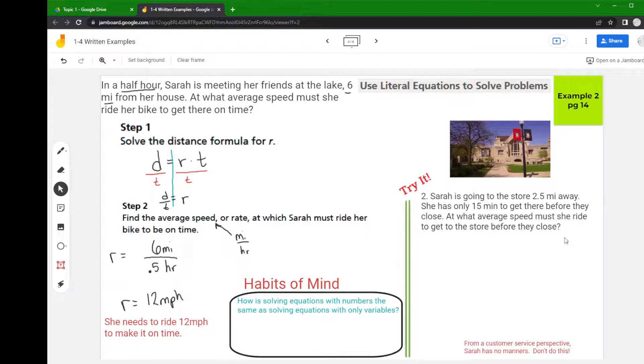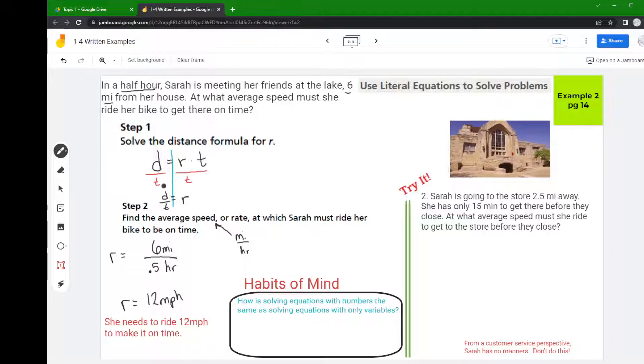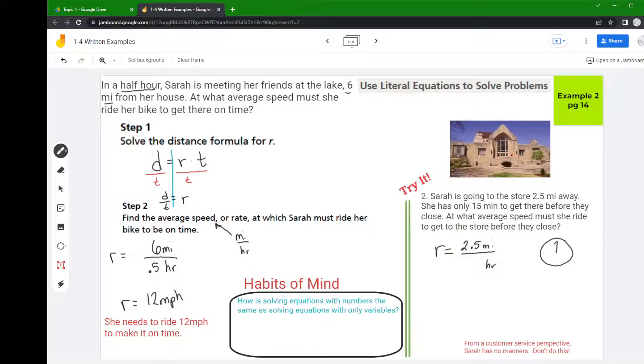What speed does she have to ride to get to the store before they close? We're going to use that same formula that we calculated earlier. The rate equals the distance over time. So the distance of 2.5 miles, that's in miles like we need. And we want it in miles per hour, right? So we have to think about 15 minutes.